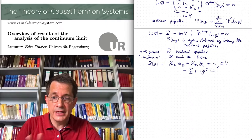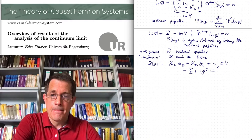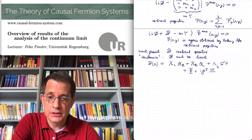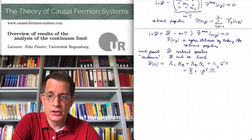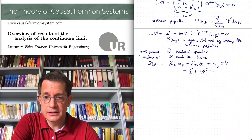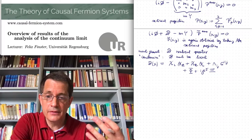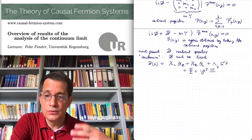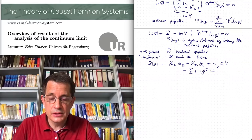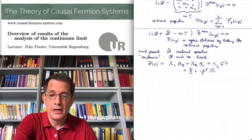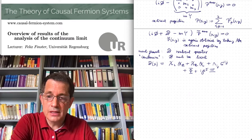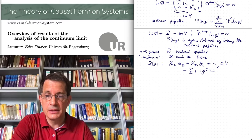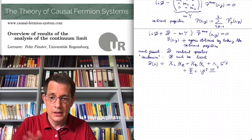Before moving on to more realistic models, let me explain a few general things in this simple model. The first question is: how does the mass term in the field equations come about, and why is this compatible with local gauge freedom? In Yang-Mills theories it is impossible to write down a mass term because it would break local gauge invariance. In the standard model the way out is to introduce a Higgs field and use spontaneous symmetry breaking. Here we haven't introduced the Higgs field, so how is it mathematically possible to get a mass term? To explain this, I need to discuss gauge transformations in more detail.